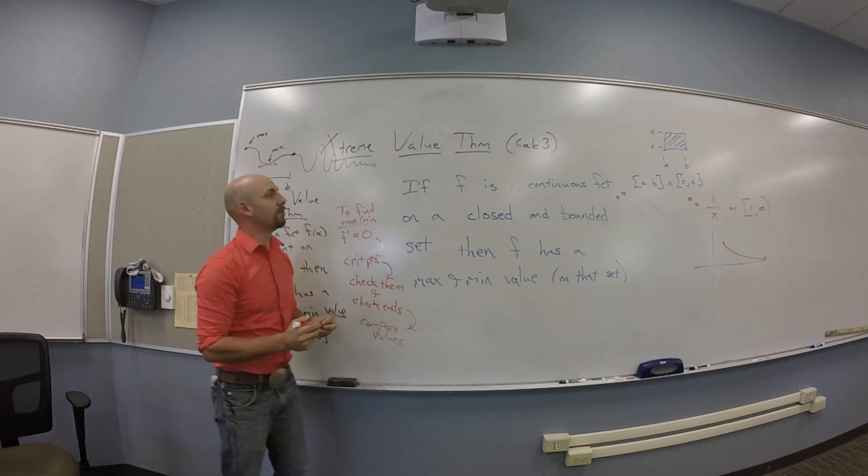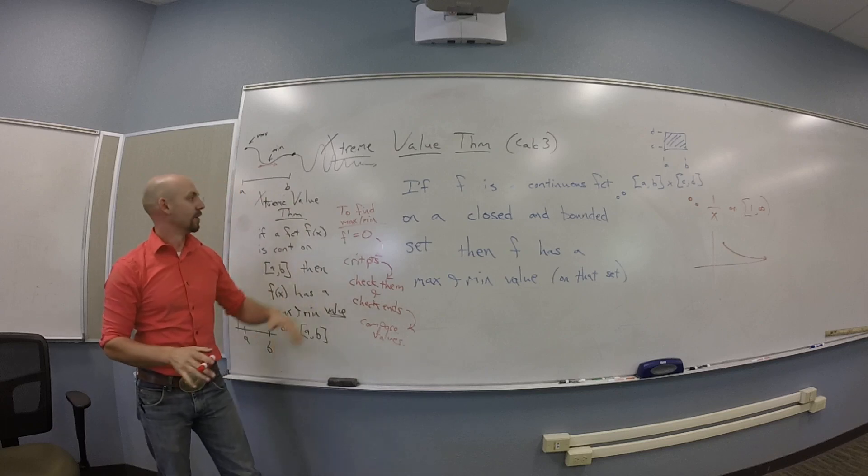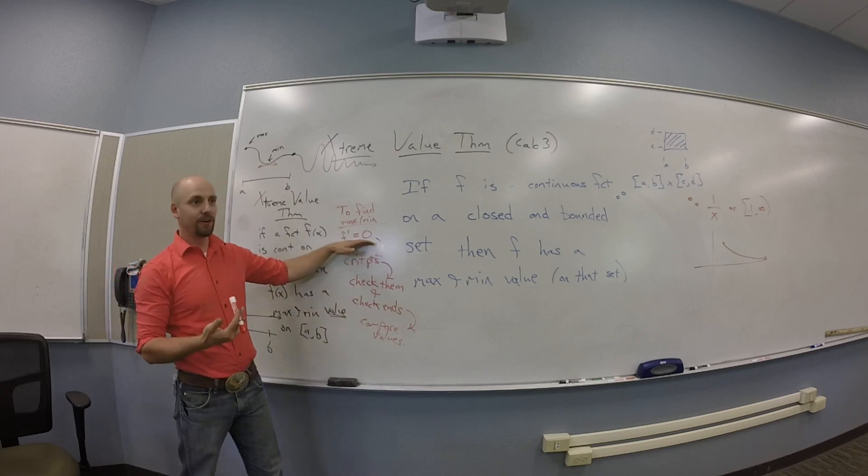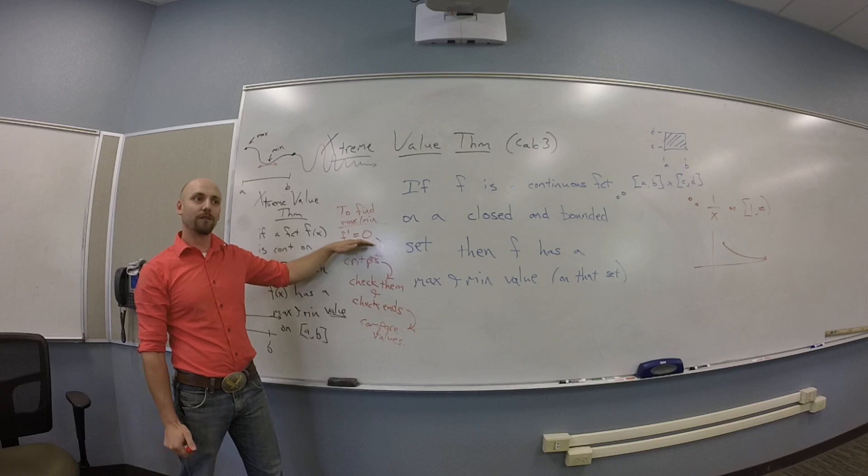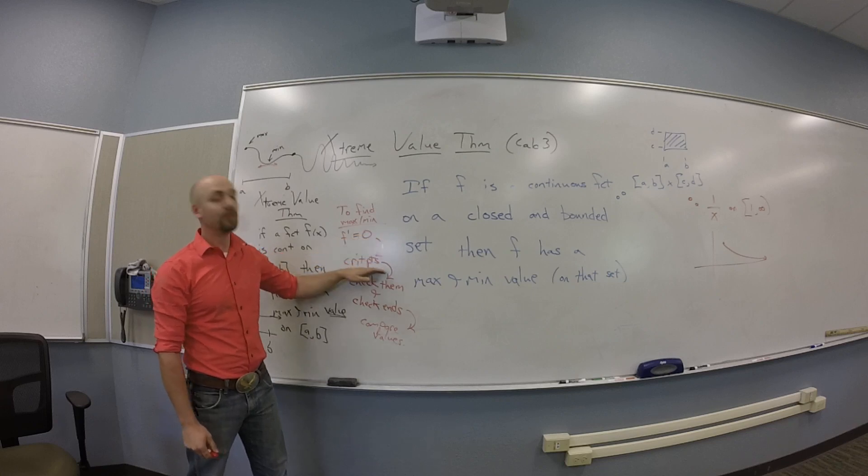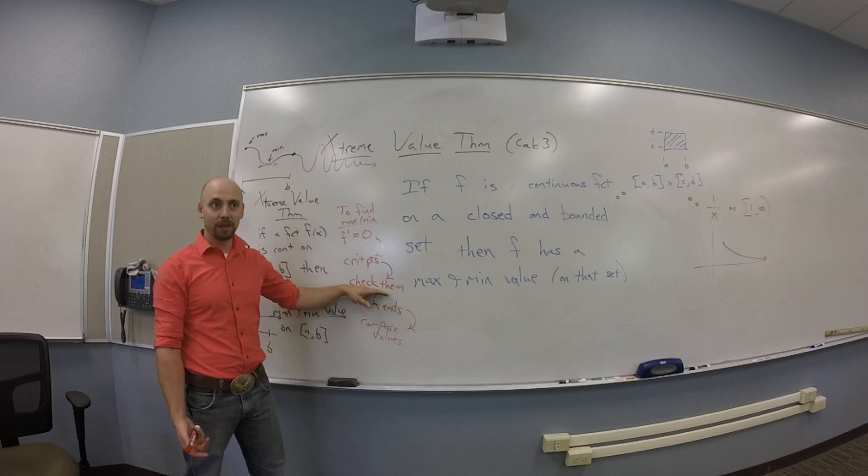Now, my claim is that when you do this in Calc 3 land, the procedure is basically the same. You need to take a derivative, which is going to be a, what's the total derivative here? Gradient. Yeah. You're going to take a gradient. So you set it equal to zero. You're going to look for the critical points. That's going to get you some of them. You're going to have to go check for discontinuities for the others. So you get some whole mess of critical points. You need to check the ones that are in the thing you care about.